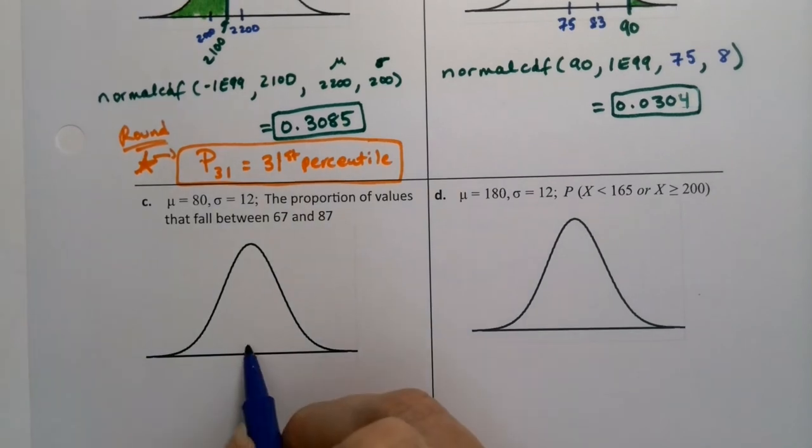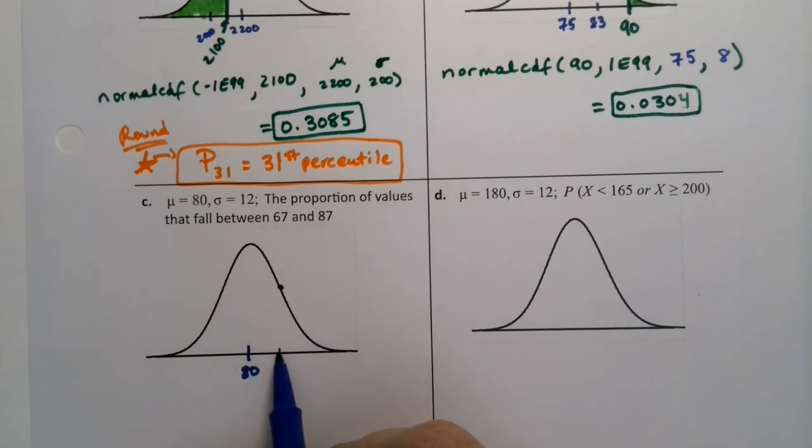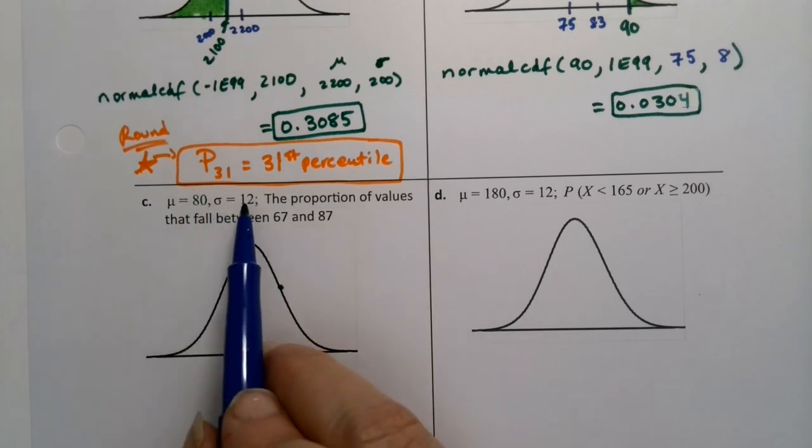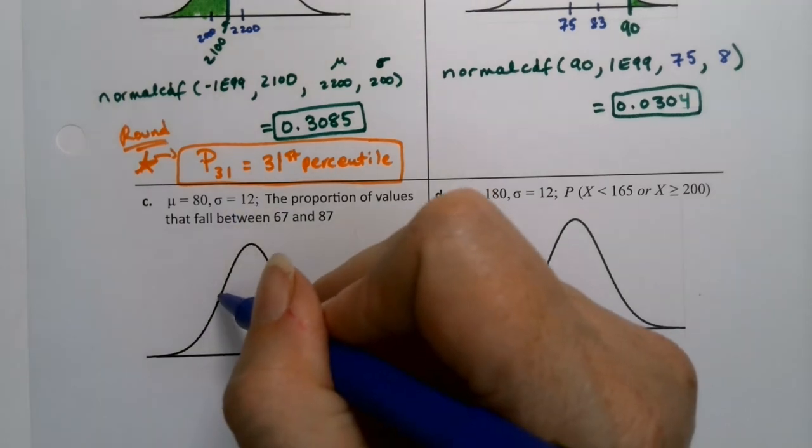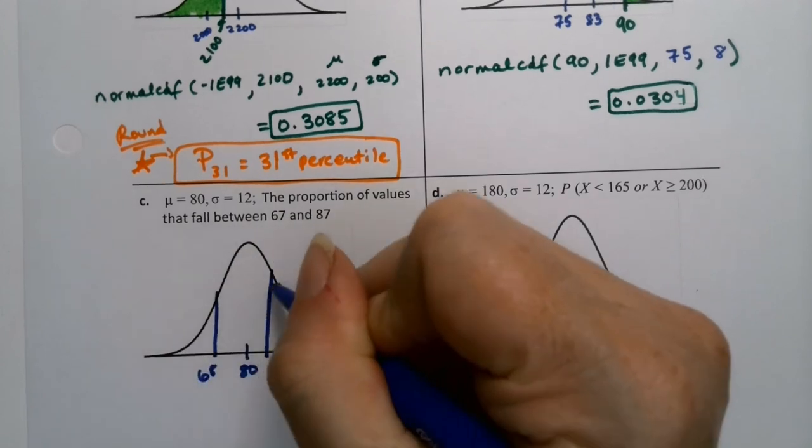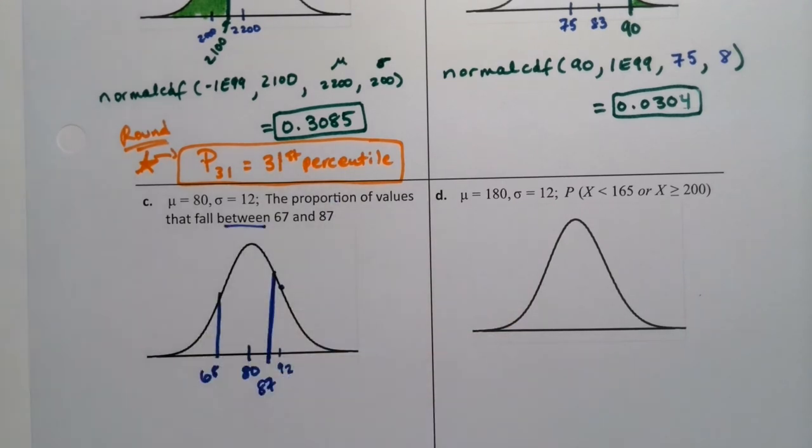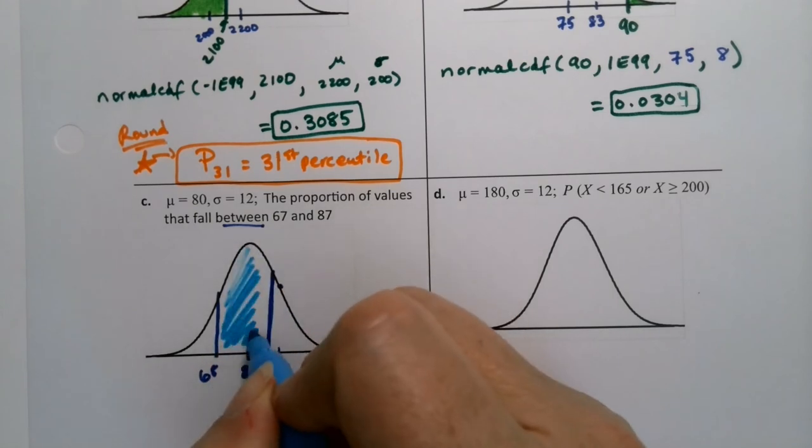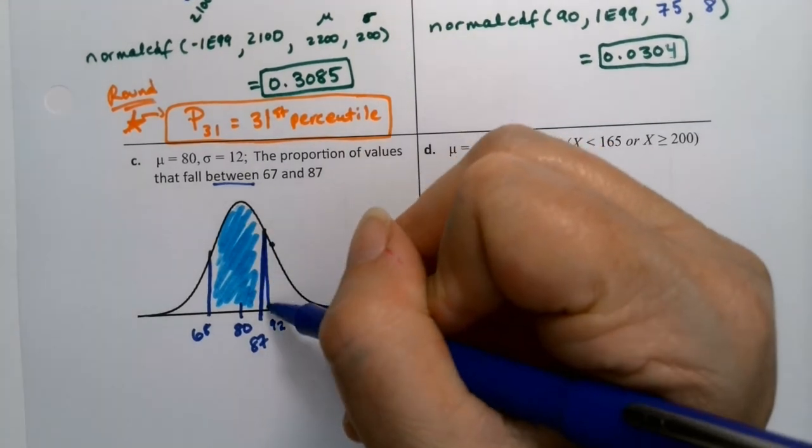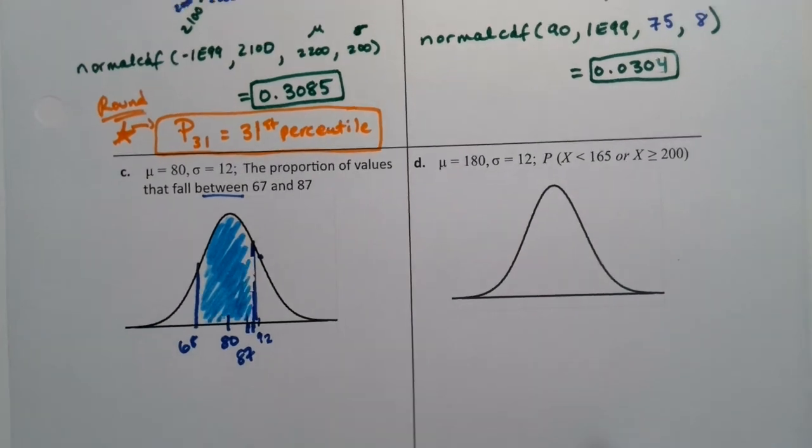80 is in the middle. And I want between 67 and 87. Well, a standard deviation away, which is the inflection point, is about 92. Because 12 plus 80 is 92. And then 80 take away 12 would be 68. So we're just a little bit shy of that. So over here is 68. Over here is 87. And I want to be between those values. So I'm going to shade the region between them. That's terrible because it's not vertical. Sorry about that. There we go. I shaded it a little better.